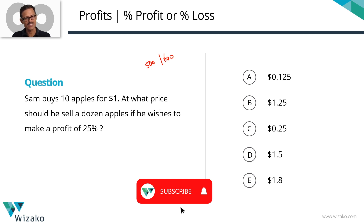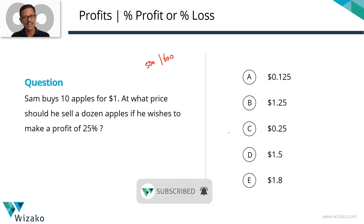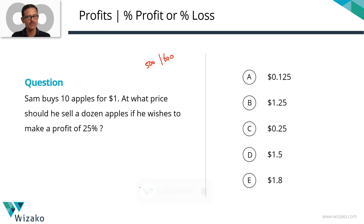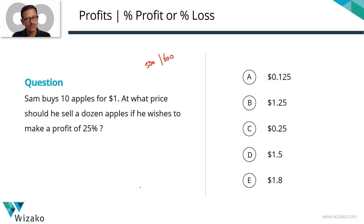Let's quickly run through this question — you'll know what I mean by that. The answer options are tantalizingly inviting you to mark the incorrect ones. Sam buys 10 apples for $1. At what price should he sell a dozen apples if he wishes to make a profit of 25%?